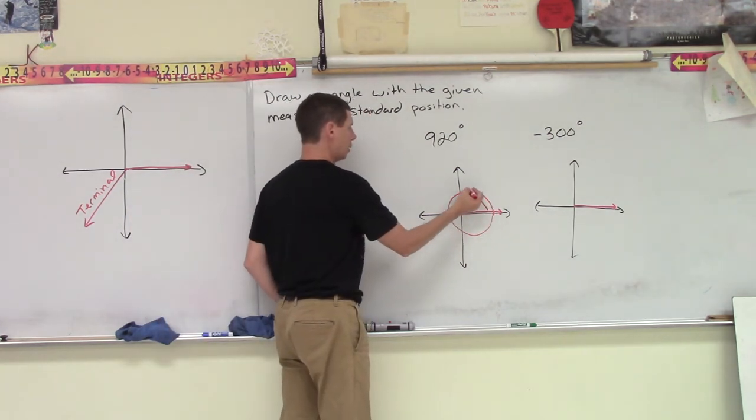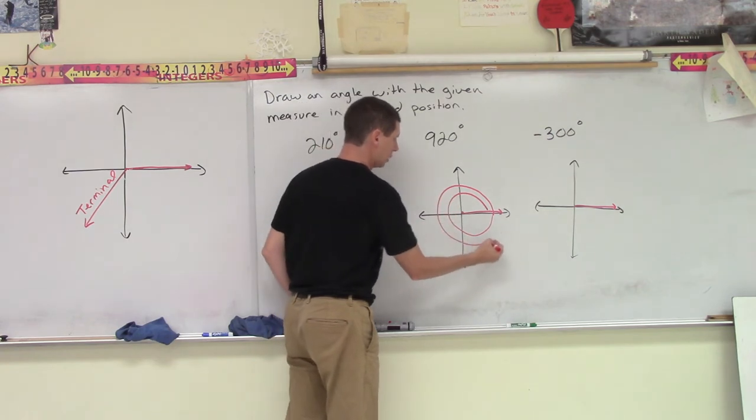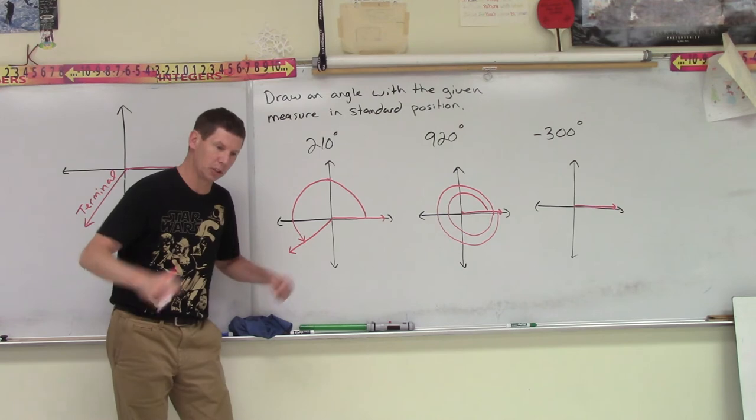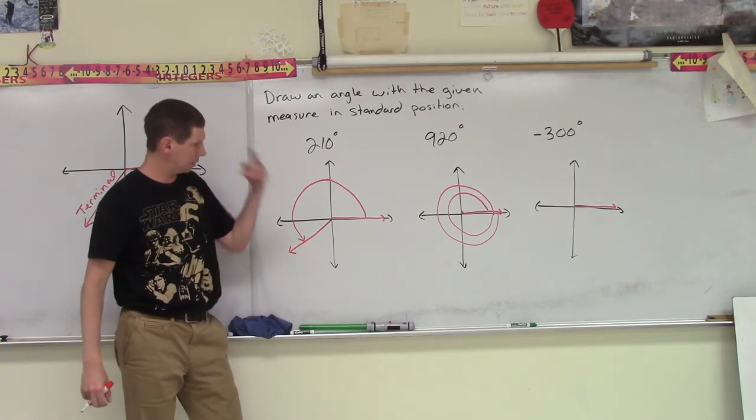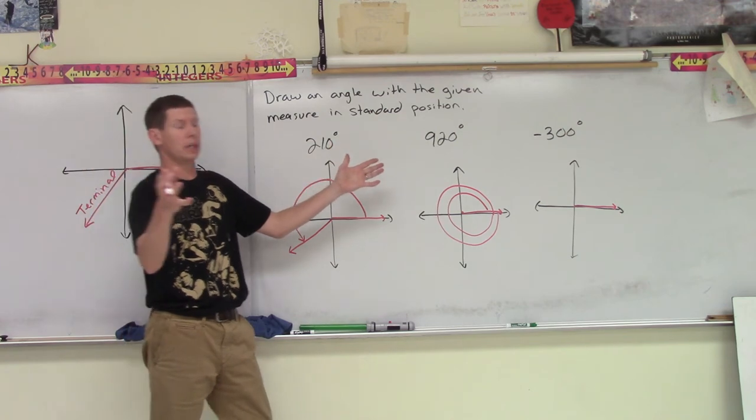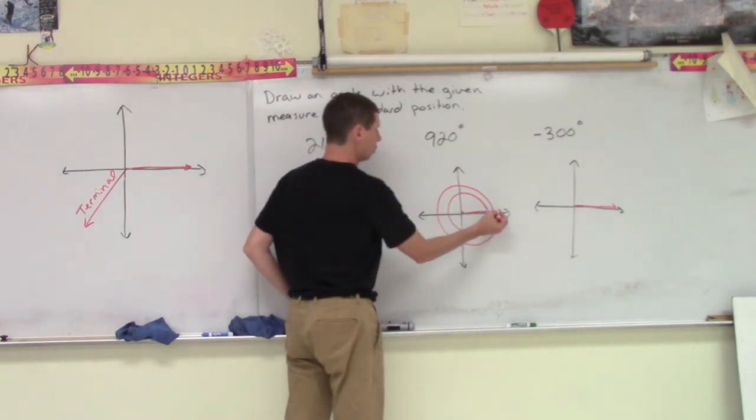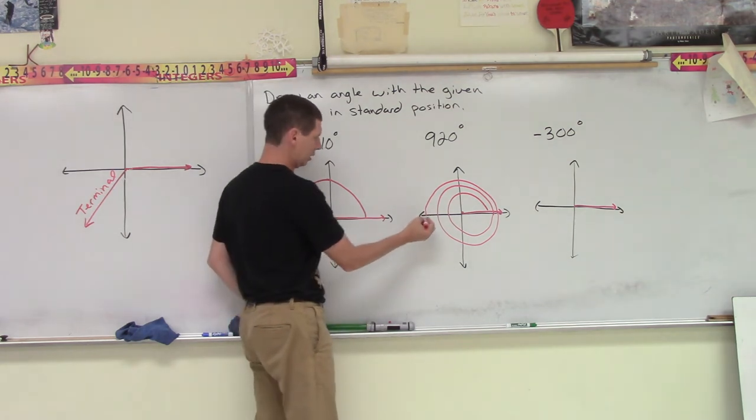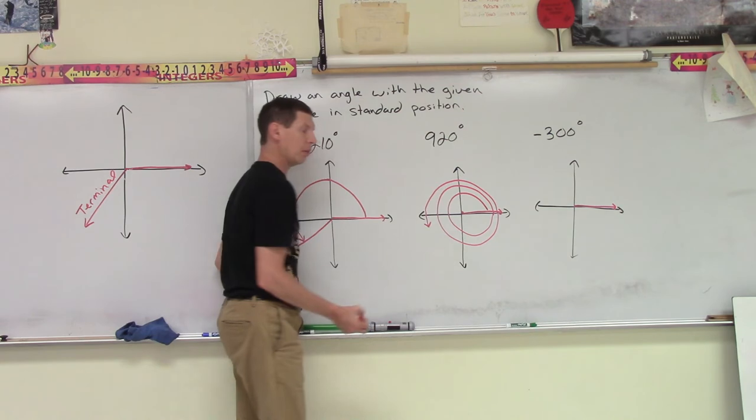So now we scoot again. If we do two 360s, if my skiing calculations from all those years at the ski hill taught me, I've just spun 720 degrees. So I have 200 degrees more to go. So if I go 200 more, well, there's 180 more. I go just a little past that.